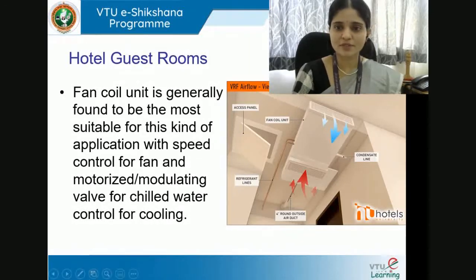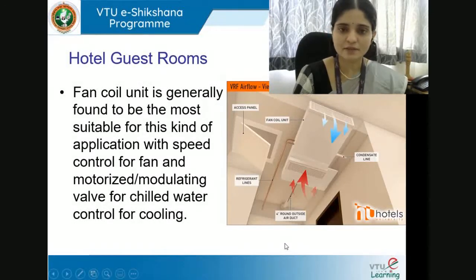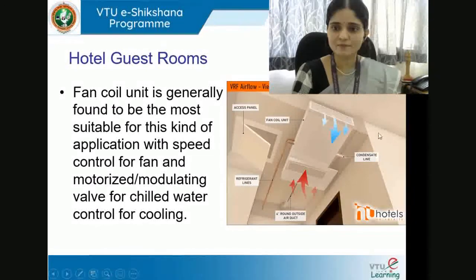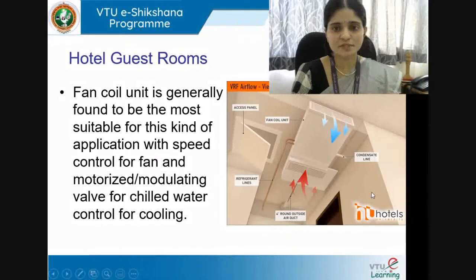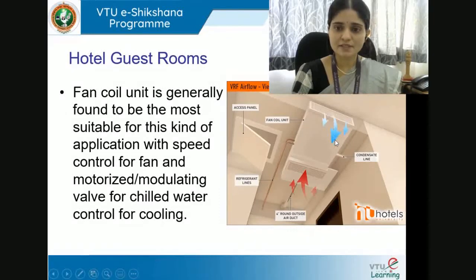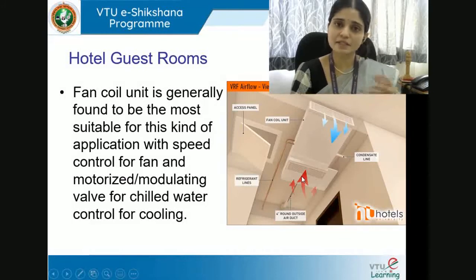A VRF — Variable Refrigerant Flow — fan coil unit can be placed on the ceiling, embedded in the false ceiling. The system includes refrigerant lines, an air duct supply grills indicated by blue lines and arrows, and return air grills indicated by red arrows, which suck in the used air from the room.